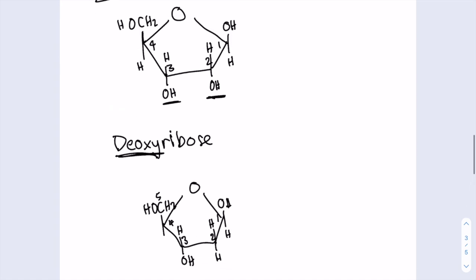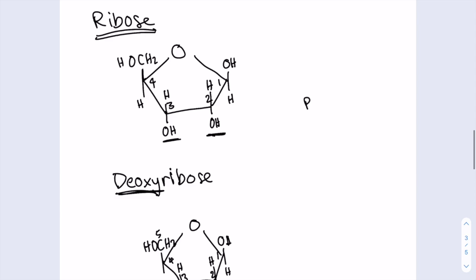So yeah, just to recap, it's a pentose, five carbons, which means it's a pentagon shape. Key difference is the lack of an oxygen on carbon-2.